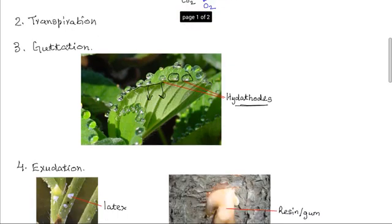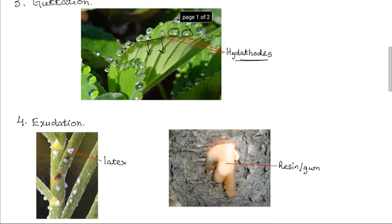A fourth method is known as exudation. Exudation is the slow release of wastes in fluid form from openings, either on the epidermis or from injured parts of the stem. This liquid waste is normally thick and viscous. And depending on the type of the plant, they come in various names. Latex is produced in certain plants.